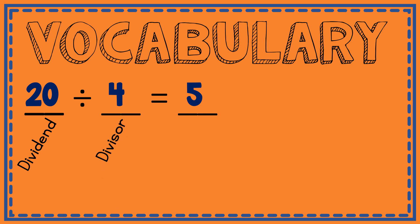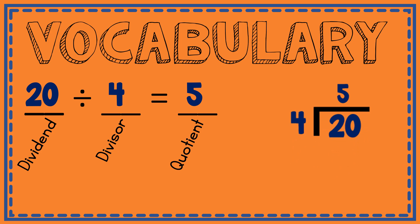4 is my divisor — that's how many groups I'm going to divide my dividend into, so 20 will be divided into four groups. And 5 is my quotient — that's my answer in a division problem. Here is another representation you'll see for division: your dividend 20 is inside the box, which looks like a sideways L. Your divisor 4 is on the left, and the quotient belongs on top.